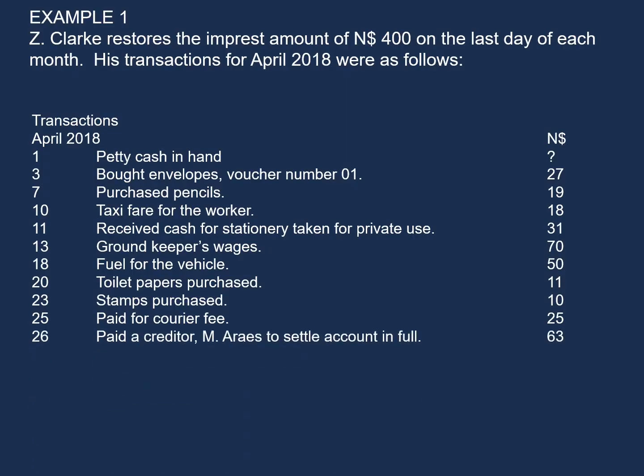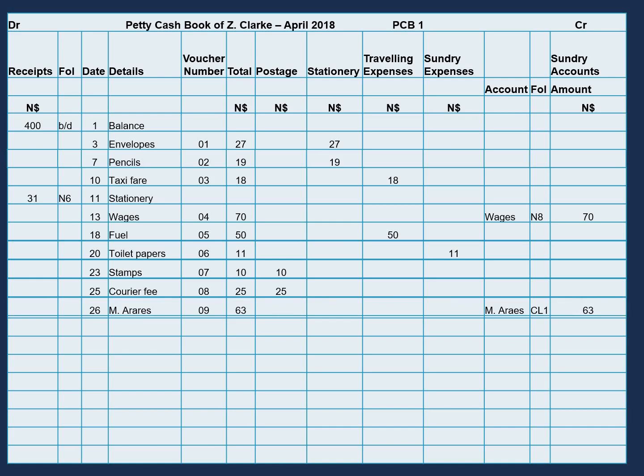On the 26th of April, we paid a creditor, MRIs, to settle account in full, $63. On the 26th, our details will be MRIs, our voucher number will be 09, the total amount will be $63. This is a sundry accounts payment — the account is MRIs, in our folio we will enter CL1 (Creditor's Ledger 1), and the amount will be $63.